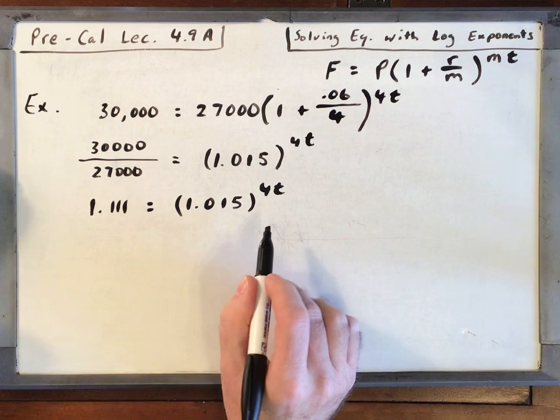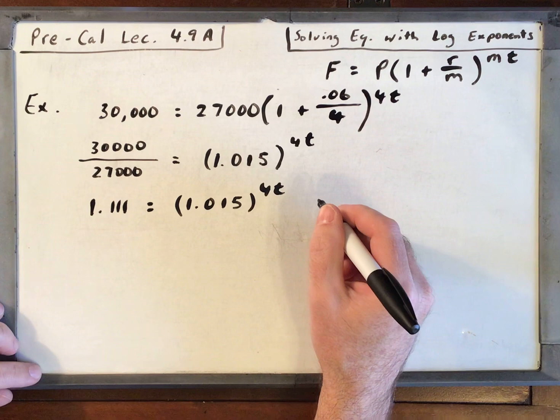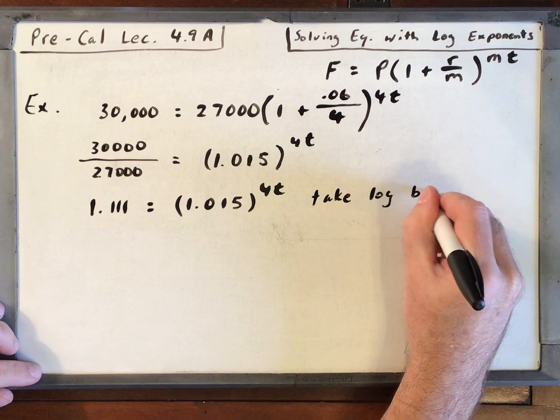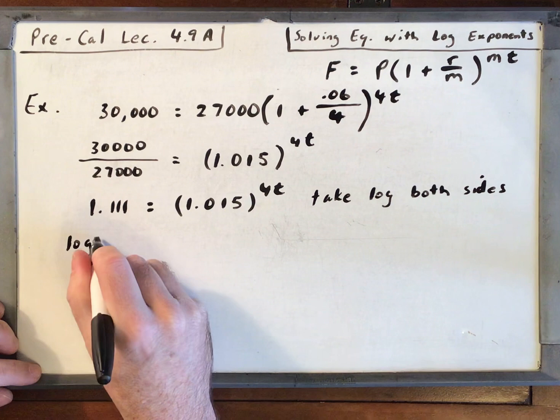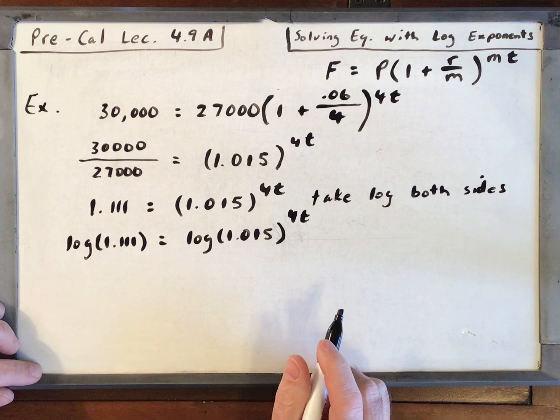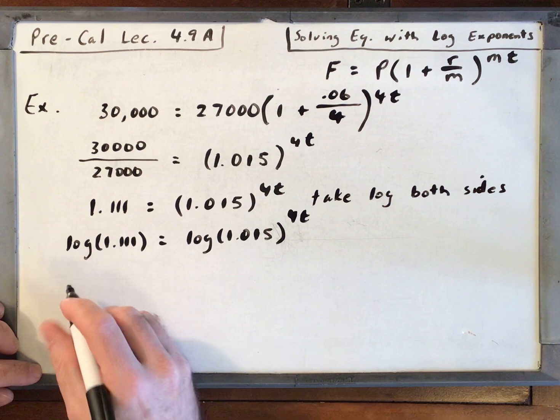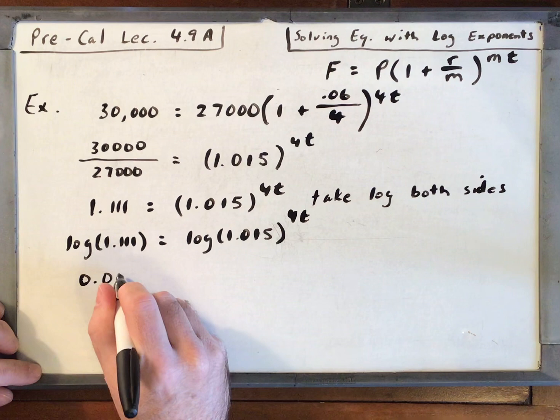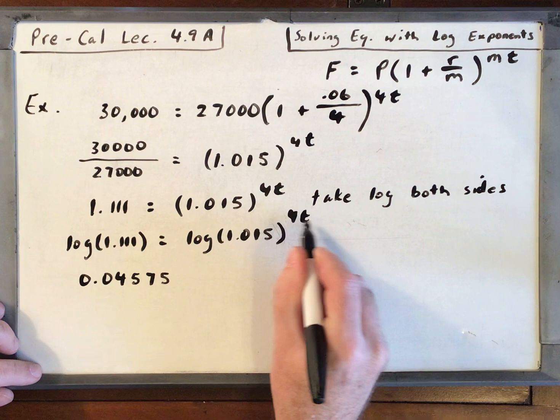Now, you can take the log base 10 or natural log of both sides. We've been doing natural log a bit lately, so let's do the log base 10. Take log both sides. We've got the log of 1.111 is equal to log of 1.015 to the 4T. Well, log of 1.111 is just a number. Put it in your calculator. It's 0.04575. Let's take it out several places. What can I do with that 4T? Bring it out front.